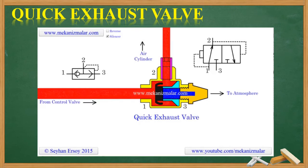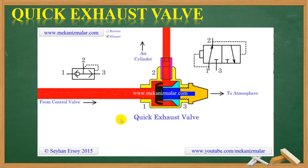Quick exhaust valves provide rapid exhaust of control air. When placed between the control valve and cylinders, they can also be used as shuttle valves. These components allow higher piston speeds to be achieved on the return stroke of single and double acting cylinders. Compressed air flows from the directional control valve via the quick exhaust valve to the cylinder. In order to achieve the full benefit of the quick exhaust function, the valve must be connected directly to the port of the cylinder.